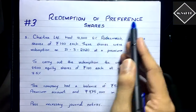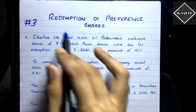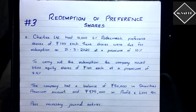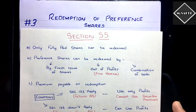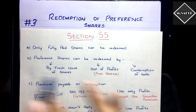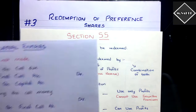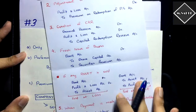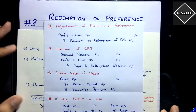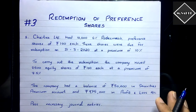Hi everyone, this is the third video of the Redemption of Preference Shares chapter. In this video we are going to solve a simple problem on redemption of preference shares. In the previous two videos we covered Section 55 of the Indian Companies Act 2013 and all the journal entries for this chapter. I'll put the links in the description below, so please watch those first and then come back to this video.